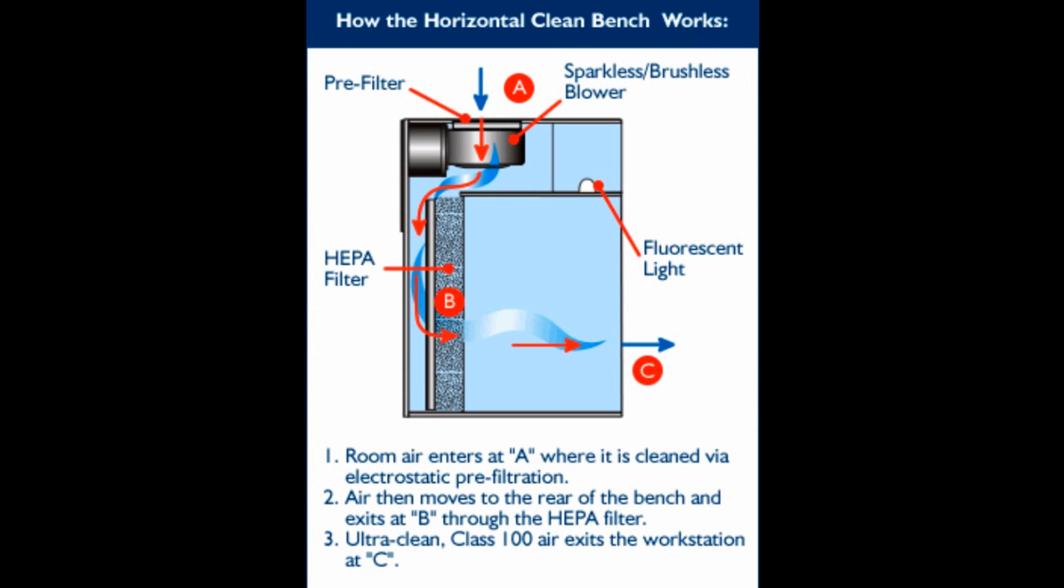How the horizontal clean bench works: Room air enters at A where it is cleaned through electrostatic pre-filtration. Air then moves to the rear of the bench and exits at B through the HEPA filter. Ultra clean air exits the workstation at C.